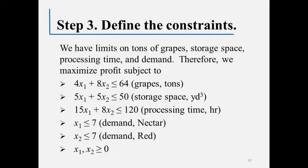Step three is defining the constraints. Reading through the problem: there is a limit on grapes — they have 64 tons. Each batch of Nectar requires 4 tons and each batch of Red requires 8 tons, so 4X1 + 8X2 must be less than or equal to 64. Next, production is limited by storage space — they have 50 cubic yards, and each batch requires 5 cubic yards, so 5X1 + 5X2 must be less than or equal to 50.